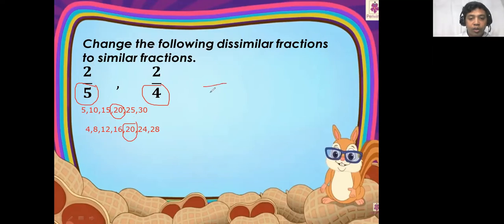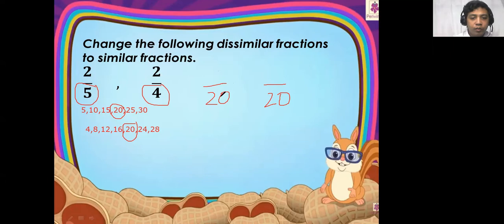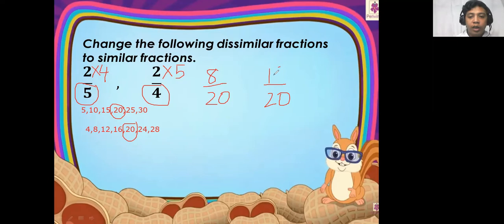Let's put twenty as the denominator of the first fraction and another twenty as the denominator of the second fraction. To get the numerator: divide twenty by five — the answer is four — and multiply it by two. Two times four is equal to eight. How about the second fraction? Twenty divided by four is equal to five, and multiply it by two — the answer is ten. So they are now similar fractions.